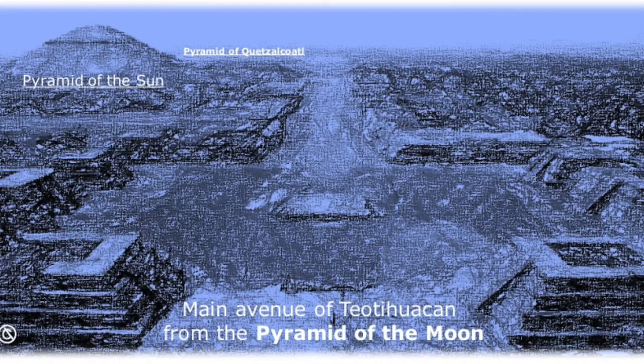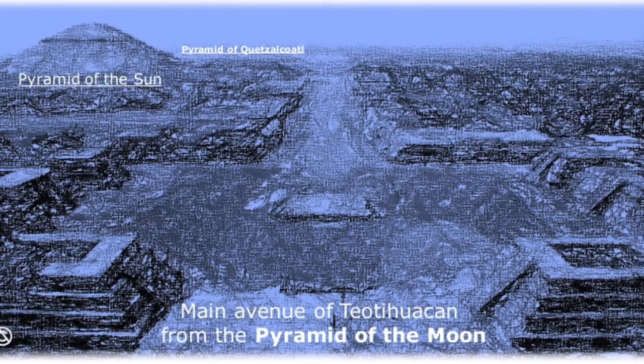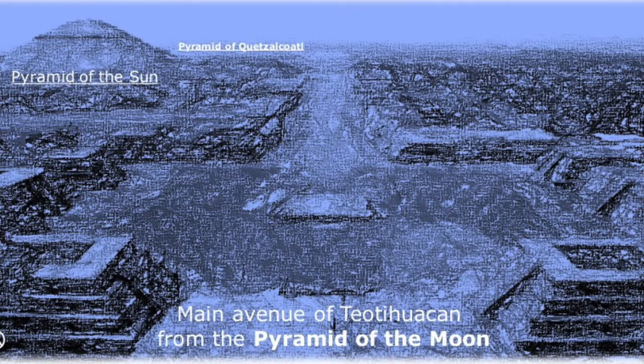When a few Mexica mercenaries entered the Valle of Mexico in the 13th century, 300 years before the arrival of Hernán Cortés, they saw the ruins of Teotihuacán, a city that had been abandoned by its inhabitants about 700 years before.